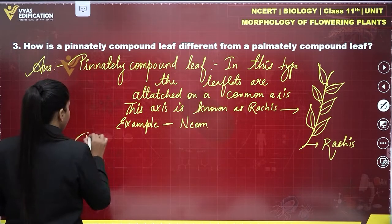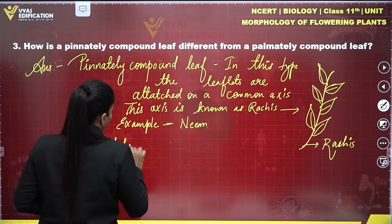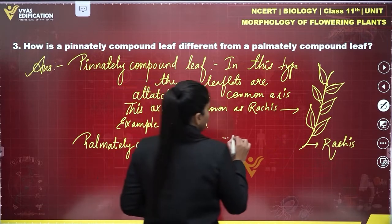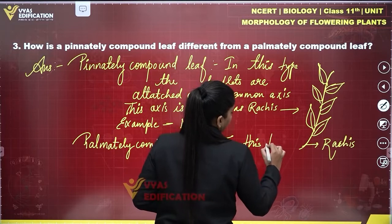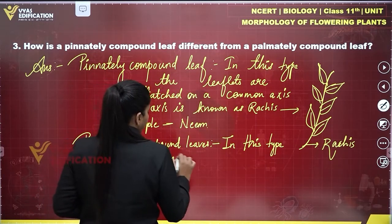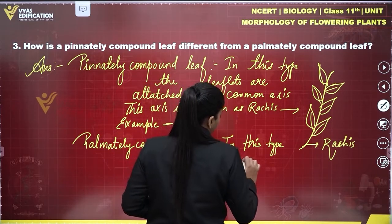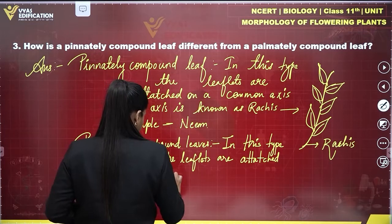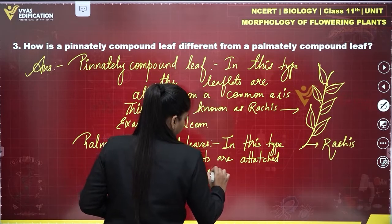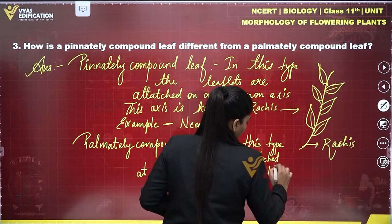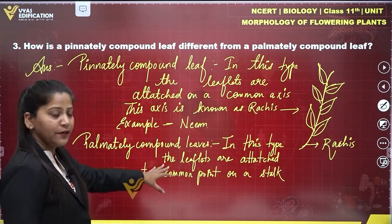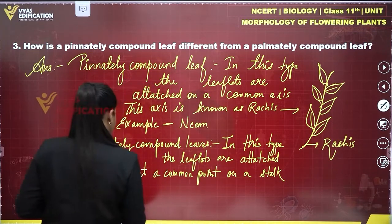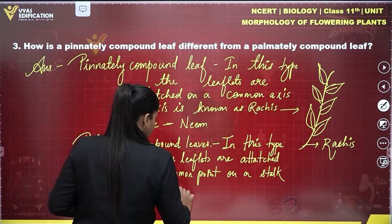If we talk about palmately compound leaves — in this type, the leaflets are attached at a common point on the stalk. These kinds of leaves are known as palmately compound leaves. The example we have for this is the cannabis plant.